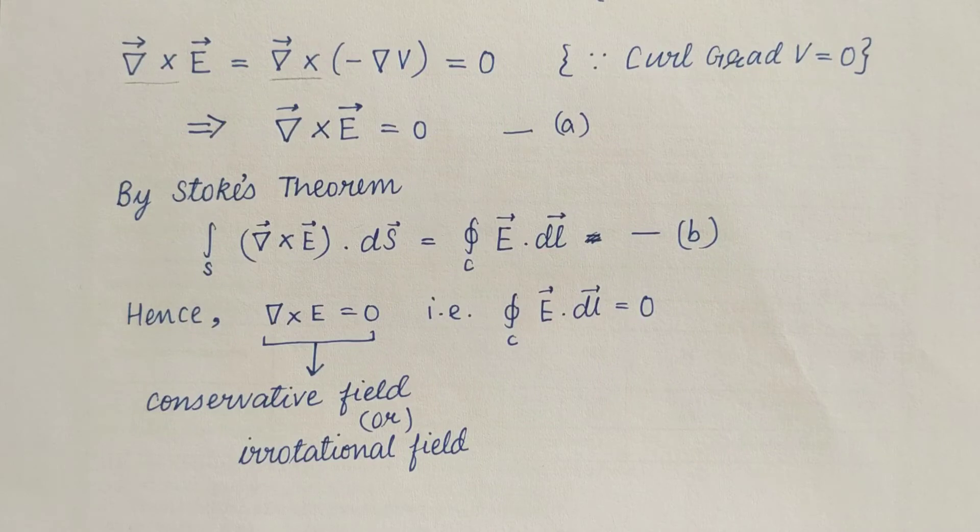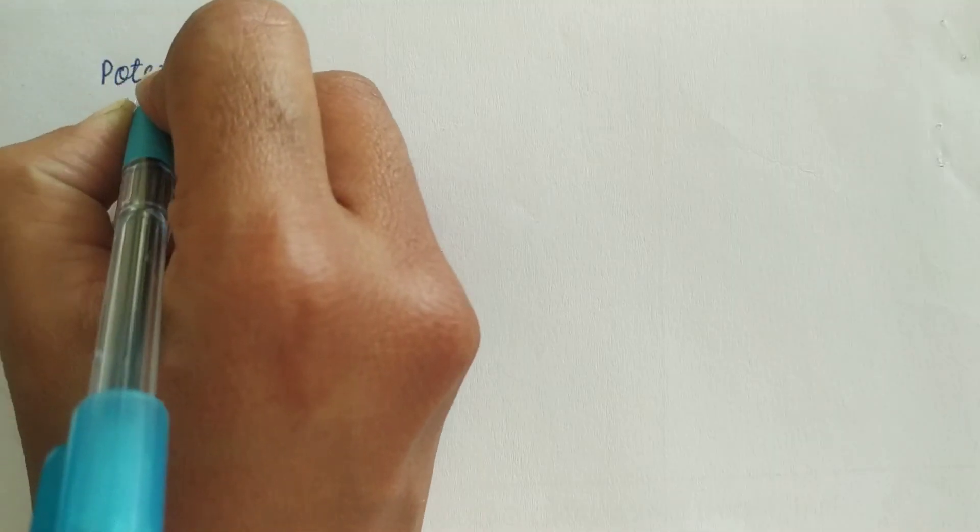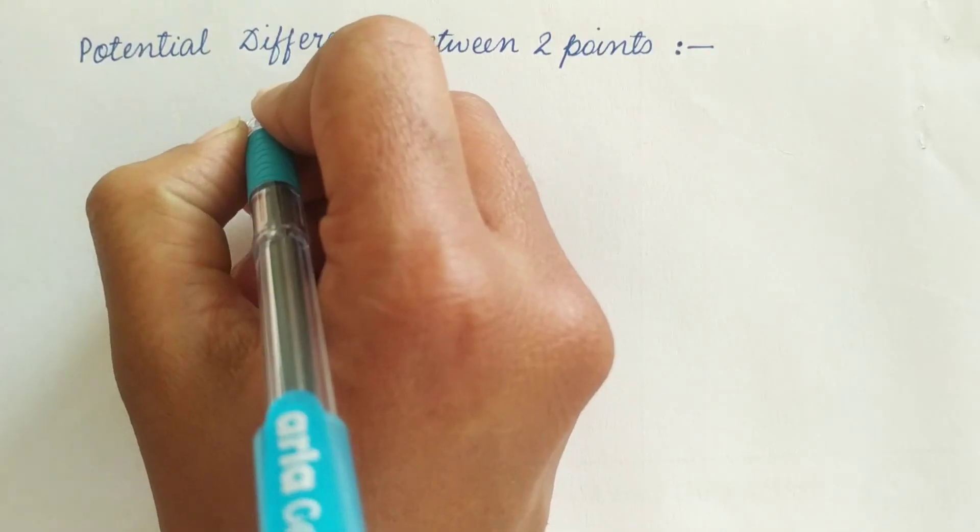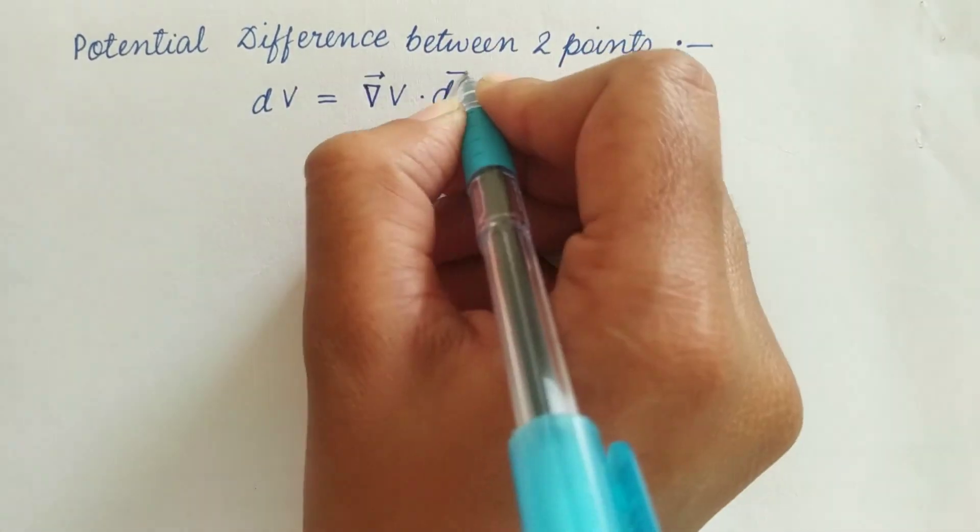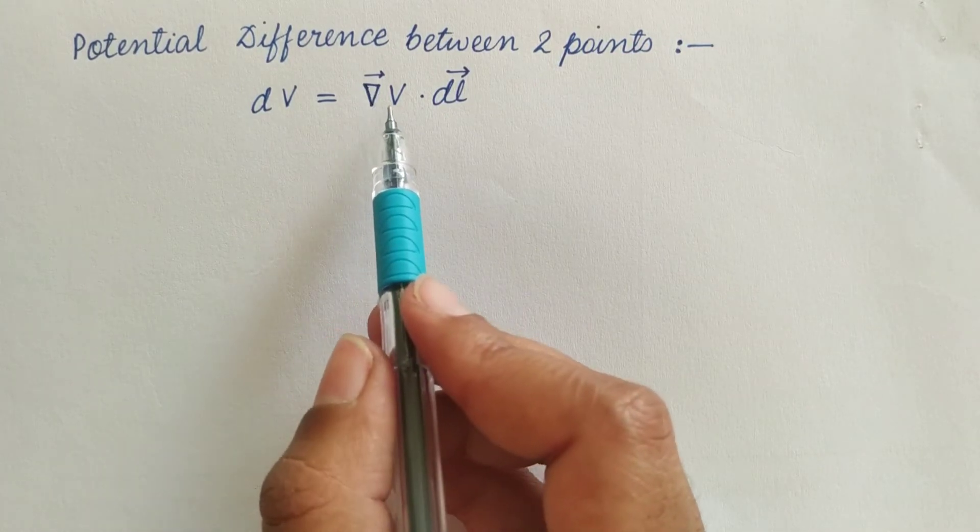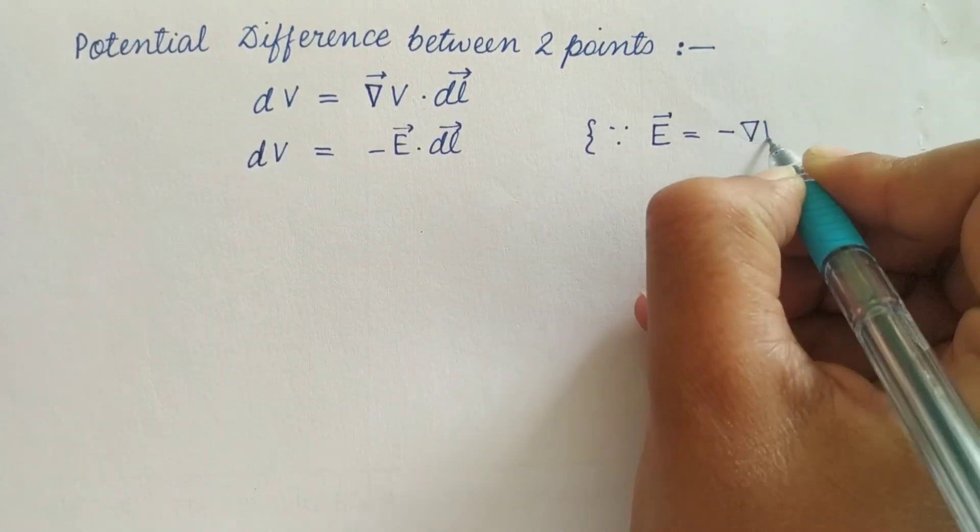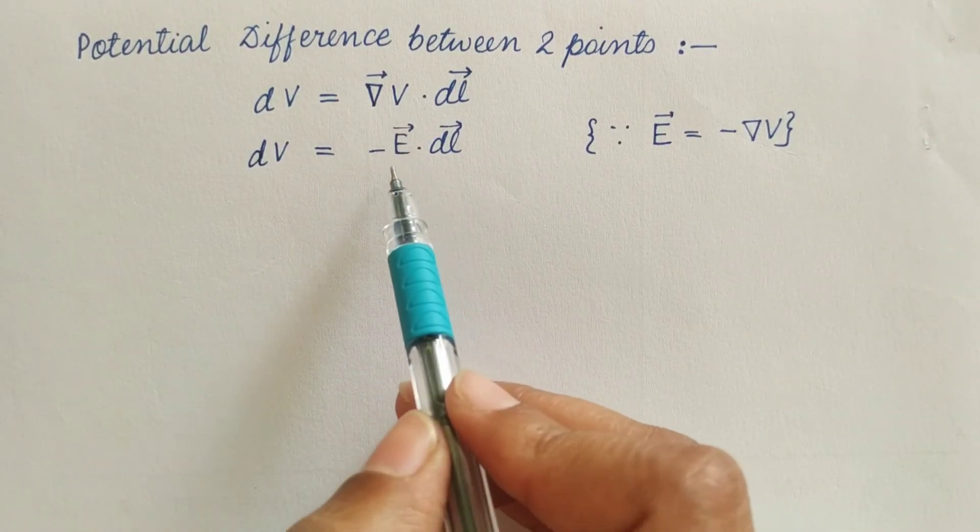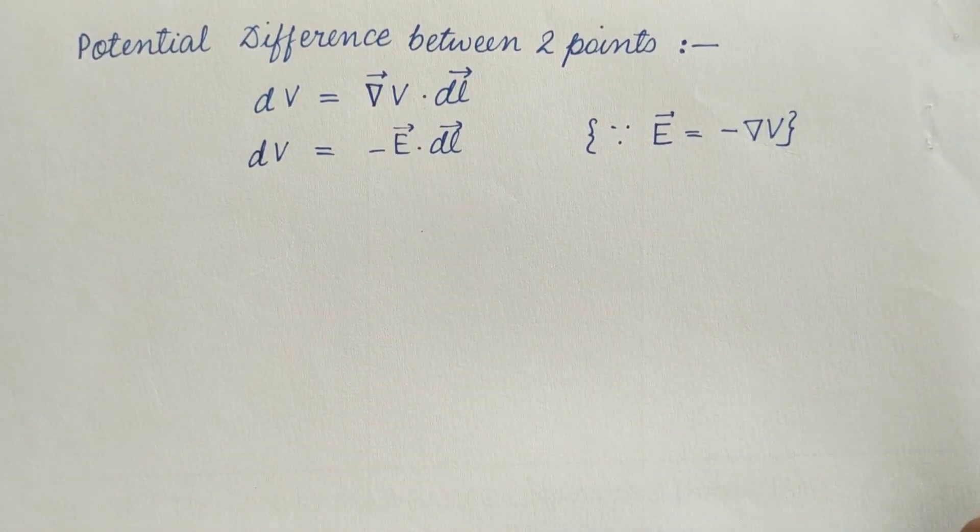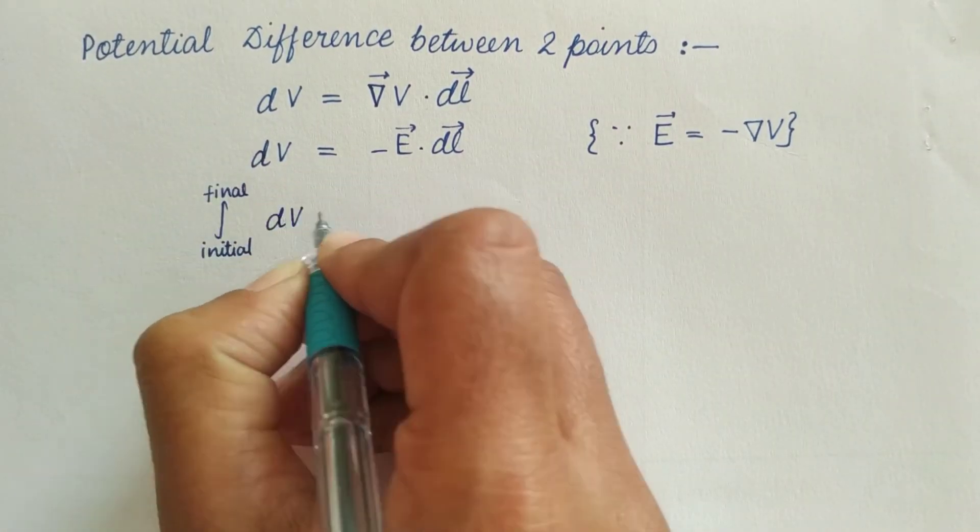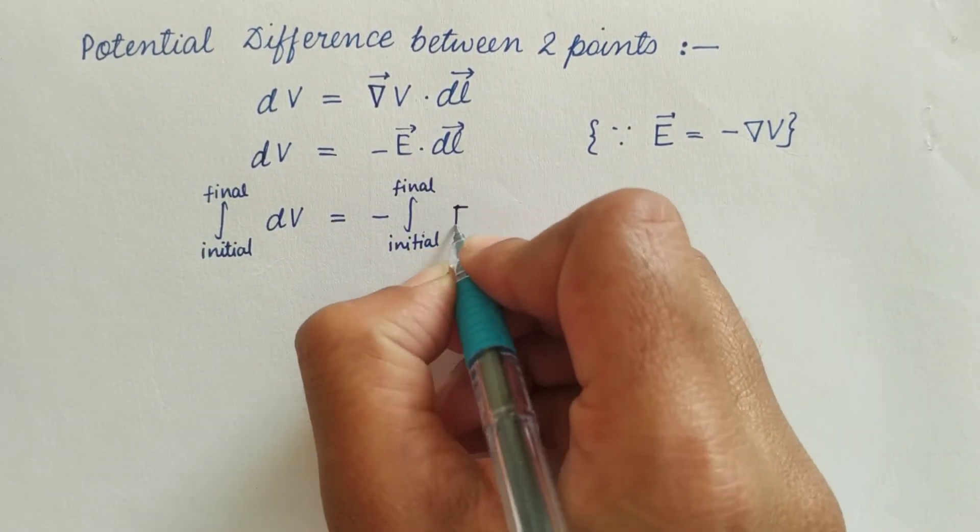Now if we talk about potential difference between two points, we will get it by dV equals del V dot DL. Here we replace del V by minus E from this equation. Now integrating both sides with the limits initial to final, we can write it as this.